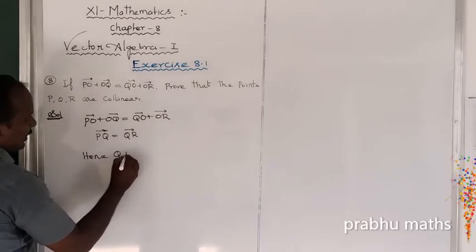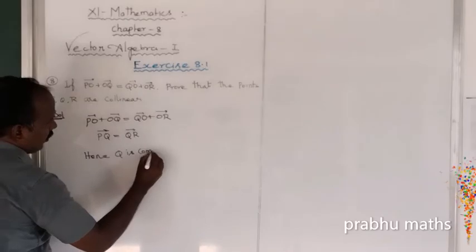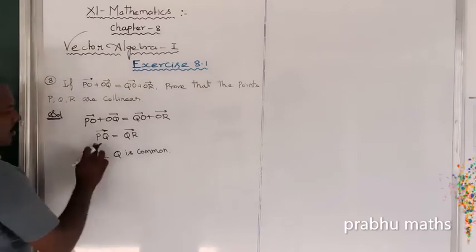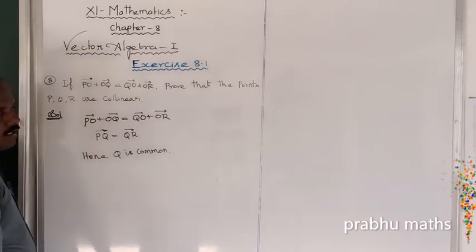Hence Q is a common point. This is the property of triangle addition.